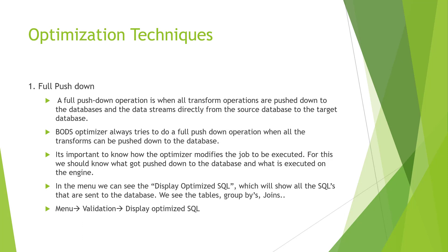When it comes to full pushdown, a full pushdown operation is when all the transformations that we have done in the jobs are pushed down to the databases and the data streams directly from the source database to the target database. BODS has an inbuilt optimizer, and this optimizer always tries to do a full pushdown operation when all the transformations can be pushed down to the database.